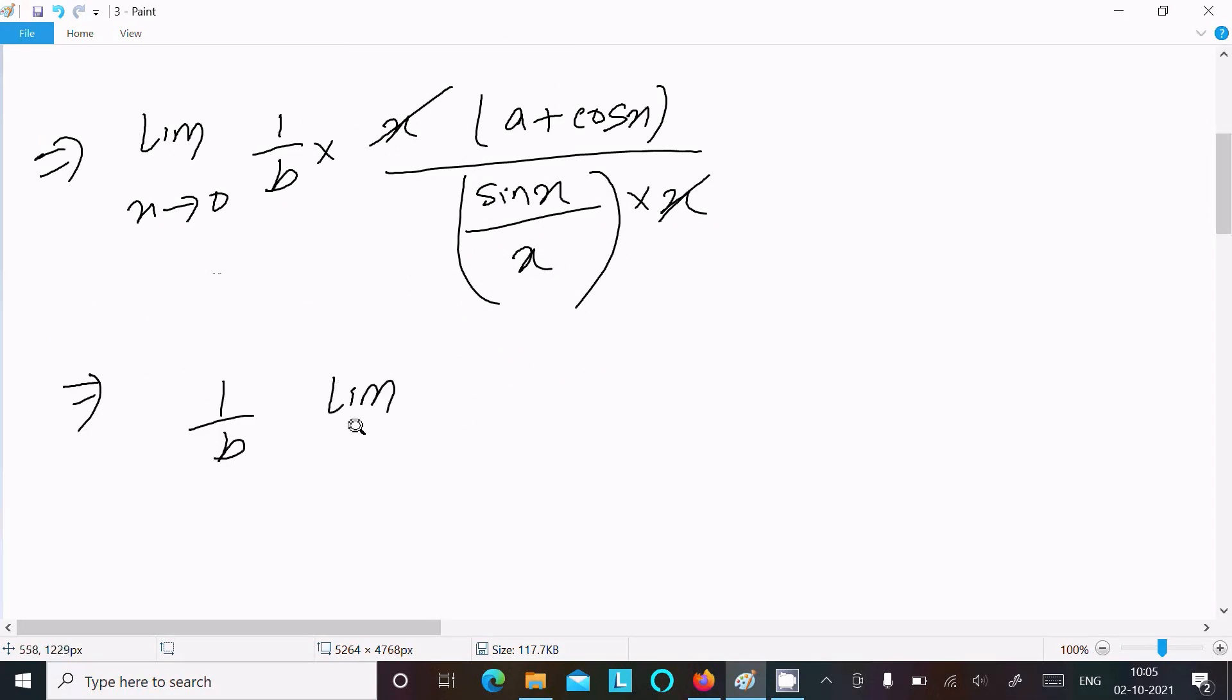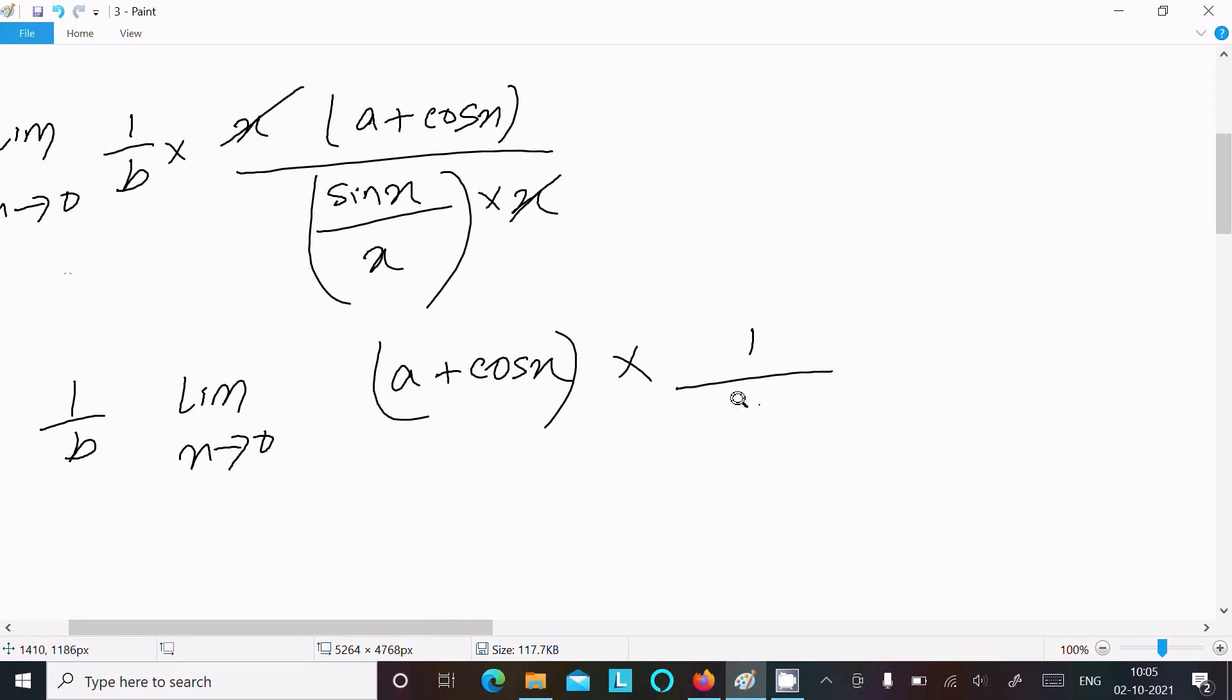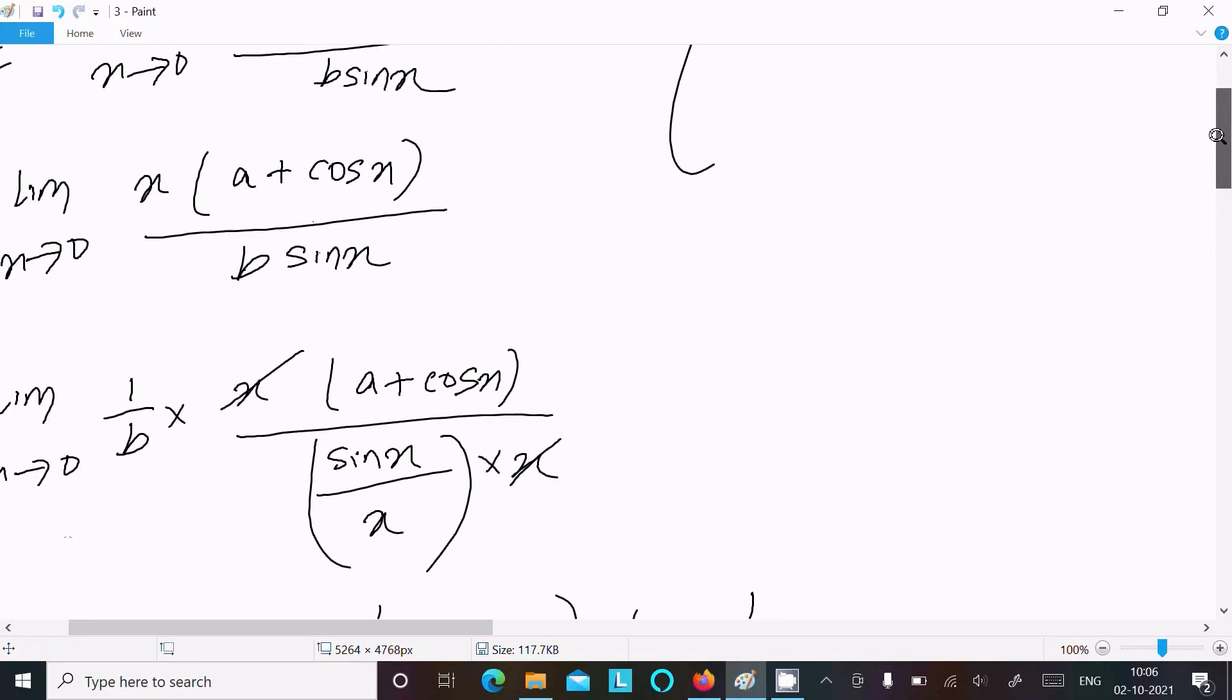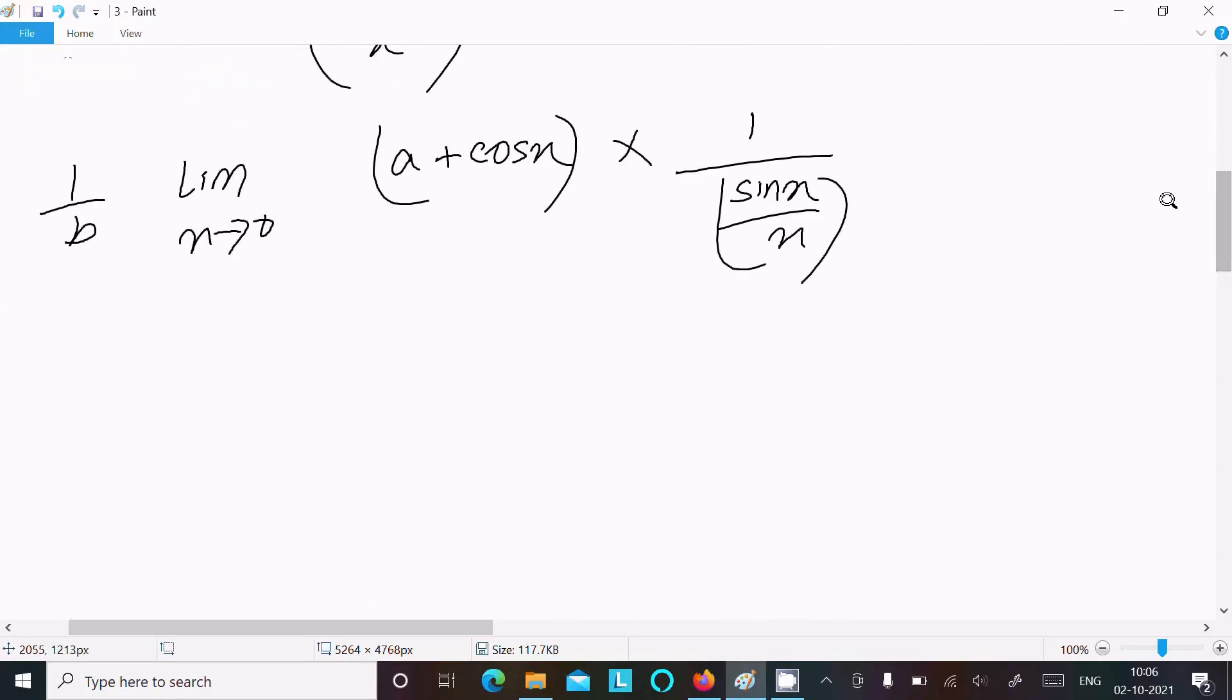So the limit as x tends to 0 of (a + cos x) times 1 divided by (sin x / x). So now, 1/b times this expression. If you calculate this: